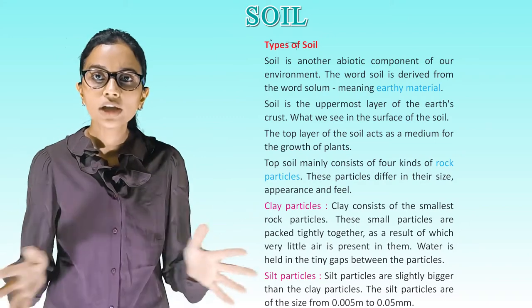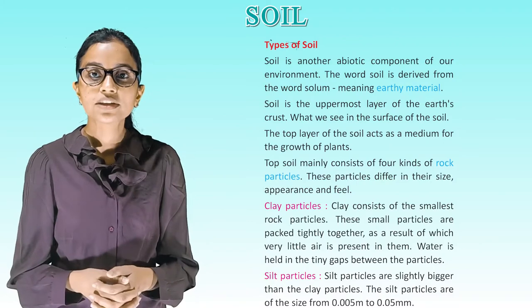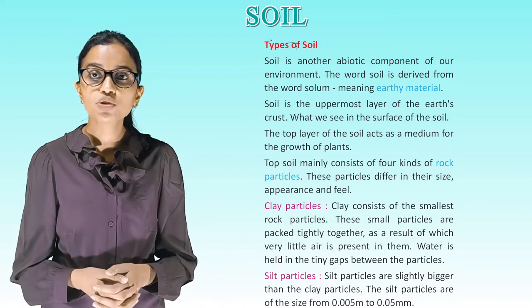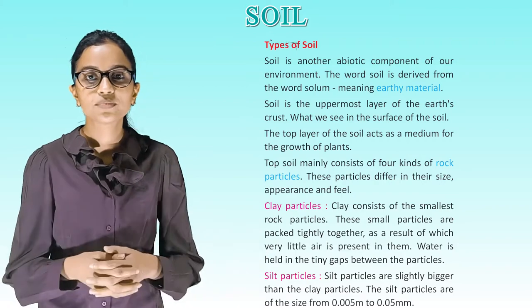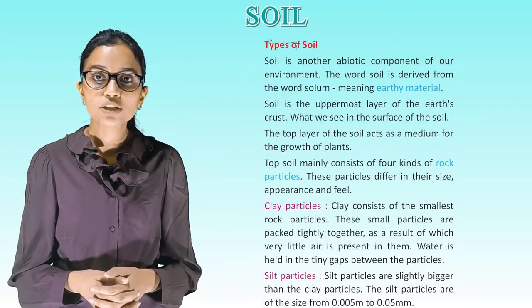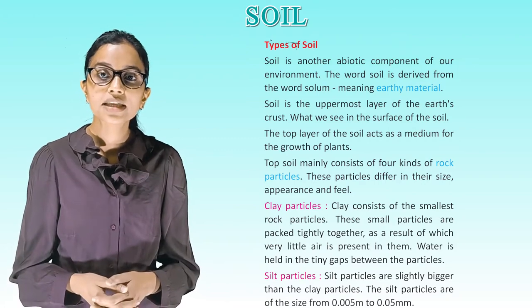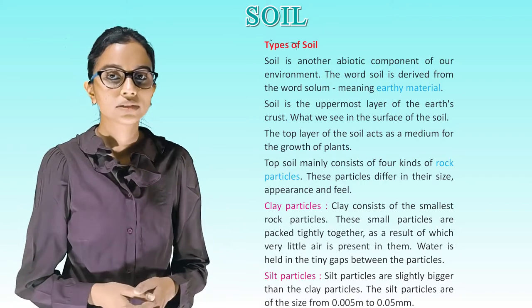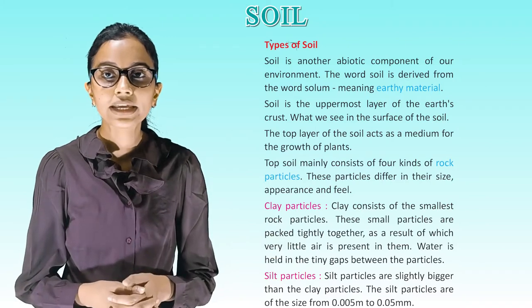Types of soil: Soil is an abiotic component of our environment. The word soil is derived from the word 'solum,' meaning earthy material. Soil is the uppermost layer of the earth's crust. The top layer acts as a medium for the growth of plants and mainly consists of four kinds of rock particles. Clay consists of the smallest rock particles; these small particles are packed tightly together, resulting in very little air between them.